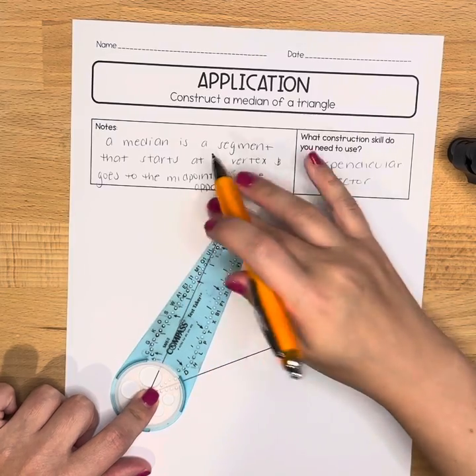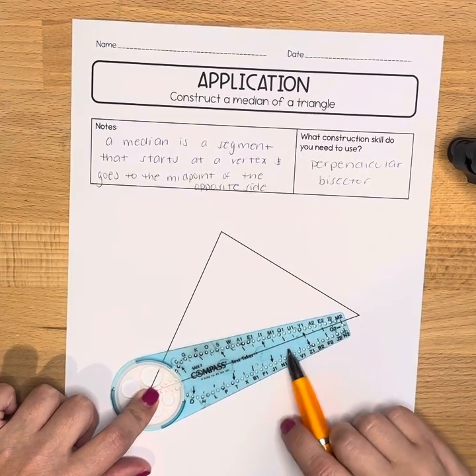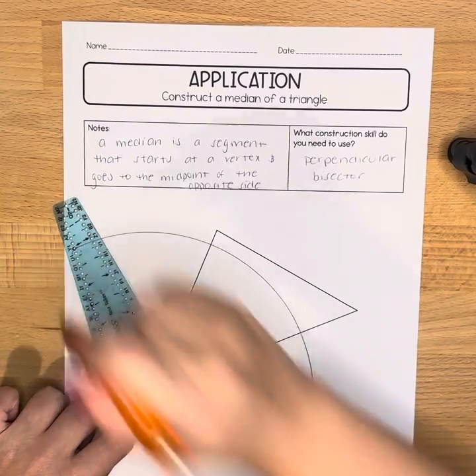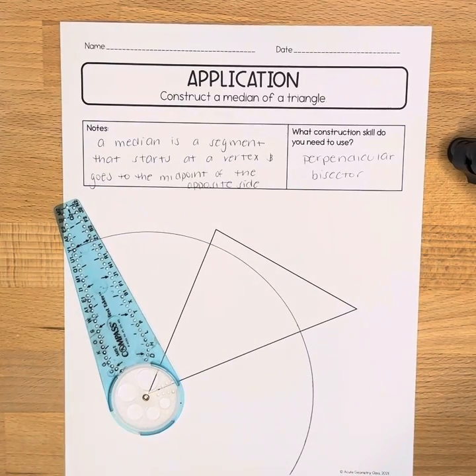And I'm going to find a measurement that's more than halfway across and when I find one I'm going to make a nice big arc going across.